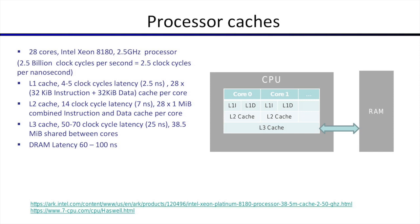After the L2 cache there is the L3 cache, which is at the CPU level and shared across all cores. Before hitting RAM, the processor checks the L3 cache. Because it serves all cores, it is larger in size but also slower — about 50 to 70 clock cycles of latency, or roughly 25 nanoseconds. The L3 cache in this processor is 38.5 megabytes shared across all 28 cores.